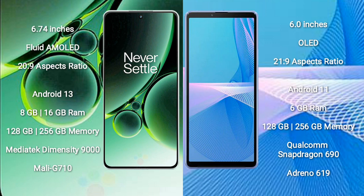OnePlus Nord 3 comes with 8GB and 16GB RAM options, and 128GB or 256GB internal storage. It features a Mediatek Dimensity 9000 processor and Mali-G710 GPU.